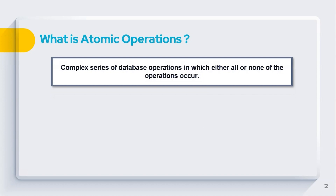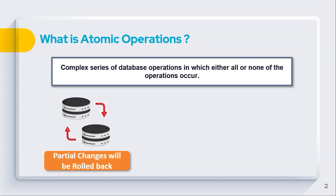Firstly, let us discuss what atomic operations are in general. In the context of any database, an atomic operation means that you either commit to the entirety of the transaction occurring in the database or have no transaction at all. It is a complex series of database operations in which either all or none of the operations are performed. An atomic transaction ensures that any commit finishes the entire operation successfully, or in case of a lost connection due to power failure or other external factors, the database is rolled back to its state prior to the commit being initiated.